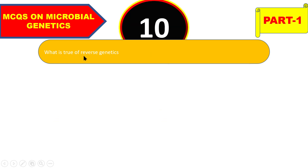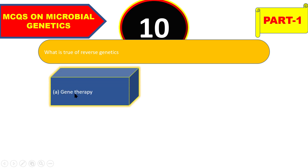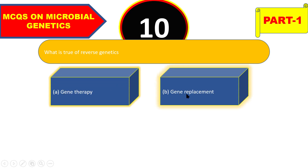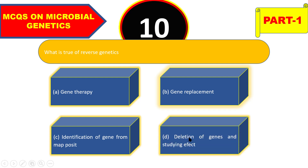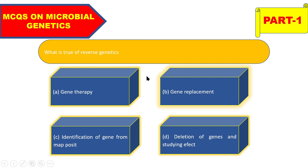Next question: what is true of reverse genetics? The options are gene therapy, gene replacement, identification of gene from map point, or deletion of genes and studying effect. The right answer is identification of gene from map point.